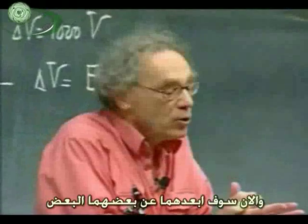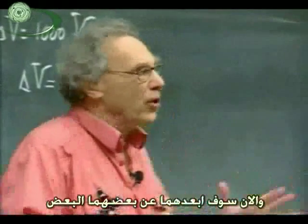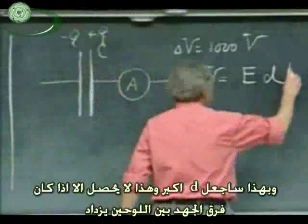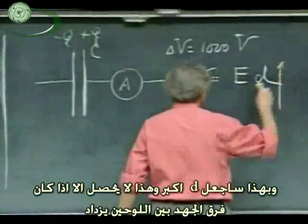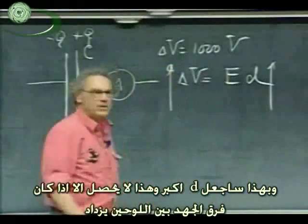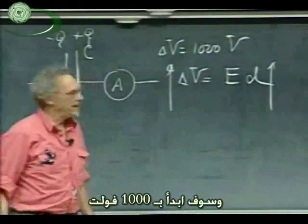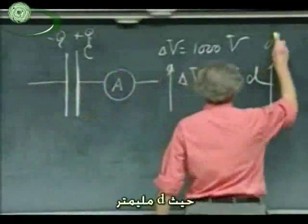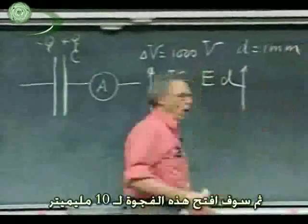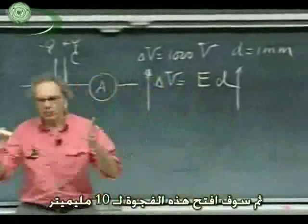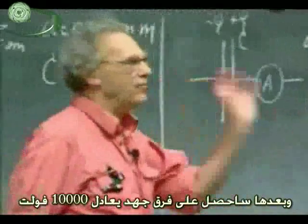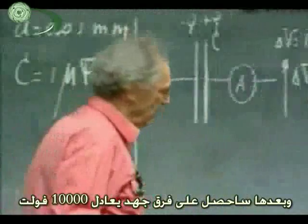And now I am going to move them further apart — I am going to make D larger. That can only happen if the potential difference between the plates increases. I will start off with 1,000 volts, whereby D is one millimeter, and then I will open up this gap to ten millimeters, giving a potential difference of ten thousand volts.